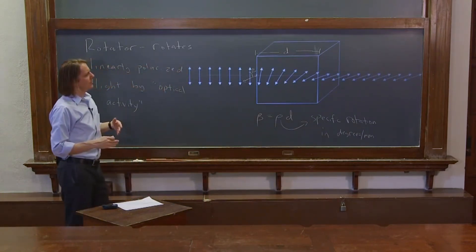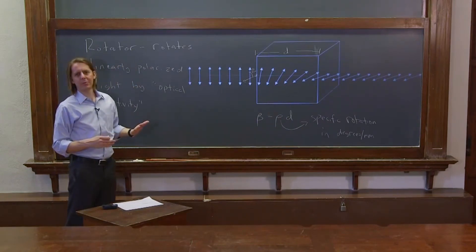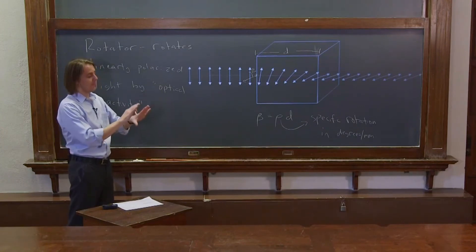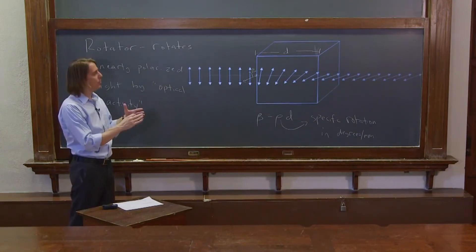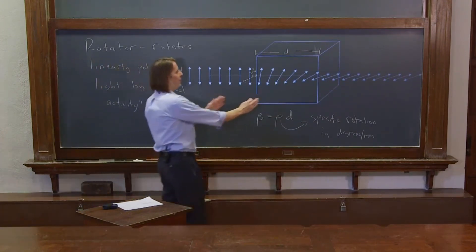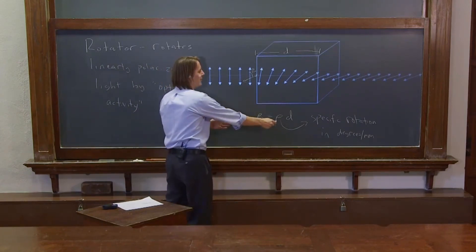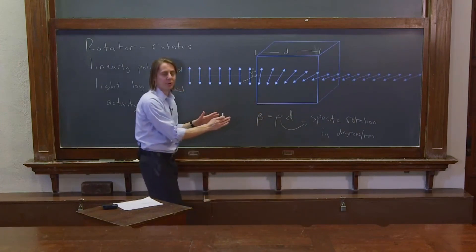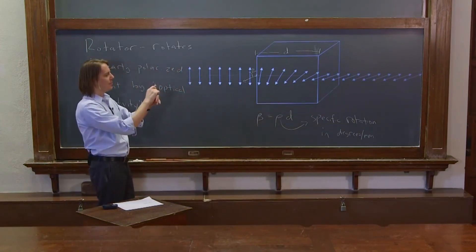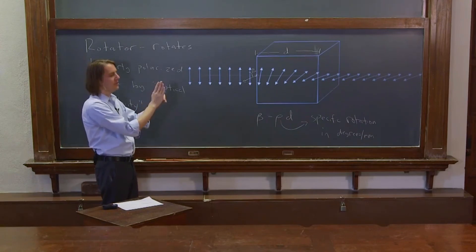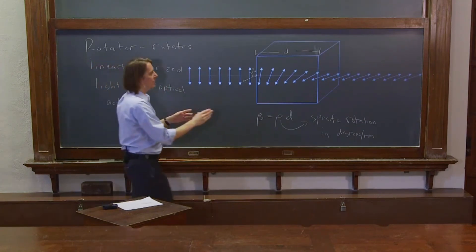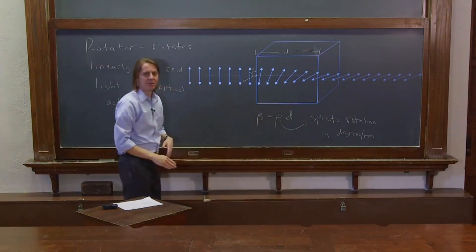Now, you could say we have already rotated light with a wave plate — a half-wave plate can be used to rotate light. But physically they're very different. The physical phenomena they use is different, and also the way you use them is different. This rotator rotates light by a set amount based on its width and its specific rotation, and that's really all it can do. A half-wave plate rotates light by twice the angle at which you orient it relative to the linear polarization, so you can actually adjust how much you rotate the light. With a rotator, you really just get what you get.